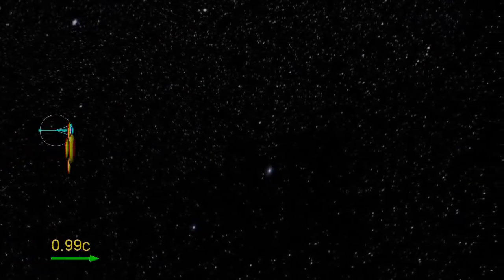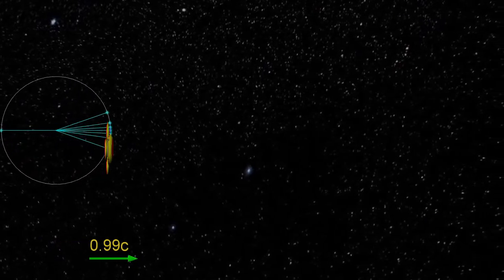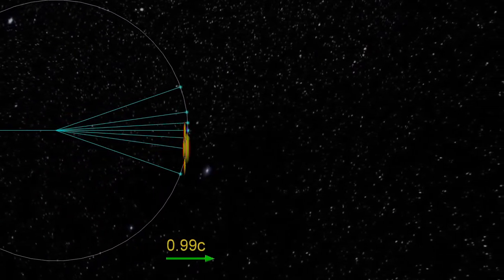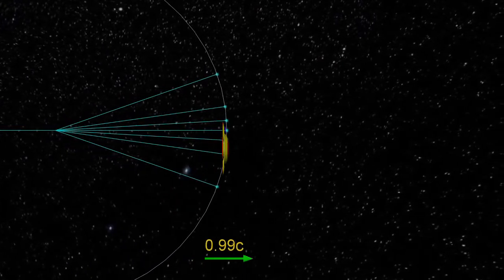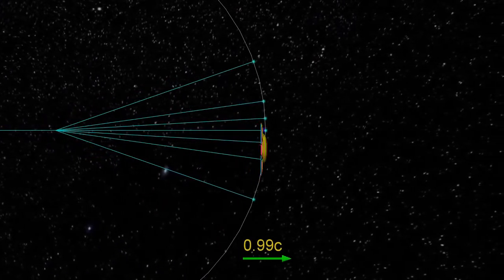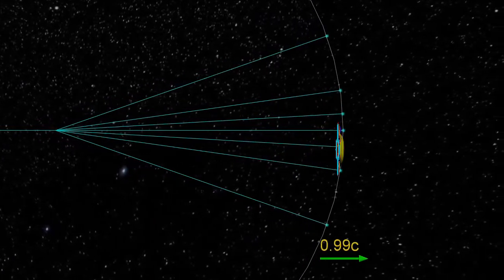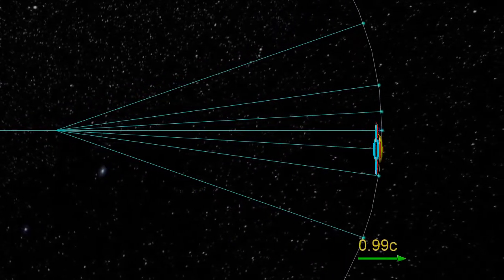At 0.99c, the beaming effect is very obvious. The reason for this is the distortion of space and time we experience for the yellow spacecraft. Let us look in more detail at this distortion of space and time.